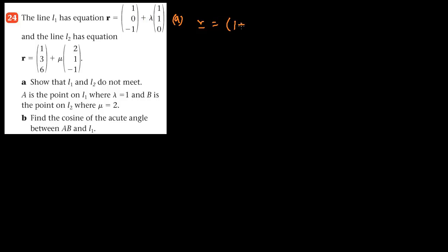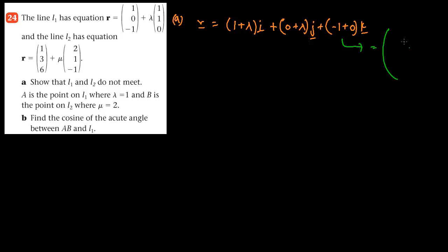The first step should be writing these out in the ijk format. So this should be 1 plus lambda i, plus 0 plus lambda j, plus minus 1 plus 0k. We could also write this as the column vector format: (1+λ, 0+λ, -1+0). It's the same thing — just column vector format and ijk format. This is L1.